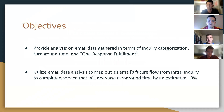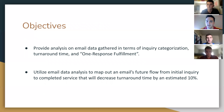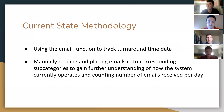Through our discussions with American Equity, we came up with two main objectives. First, provide analysis on email data in terms of inquiry categorization, turnaround time — meaning the time it takes to respond to an email — and one-response fulfillment, solving a problem in one response. Second, utilize the email data analysis to map out an email's future flow from initial inquiry to completed service that will decrease turnaround time by an estimated 10%.